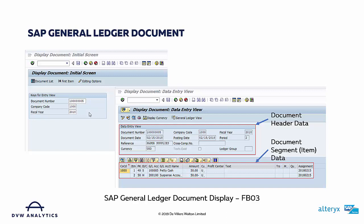The first is header-level data, and the second is segment- or item-level data. This is important because the header-level data and the segment-or-item data are physically stored in different tables within an SAP system. Therefore, if I'd like to extract data from SAP into Alteryx and effectively reconstitute that document, I need data from both the header-level and the item-level.